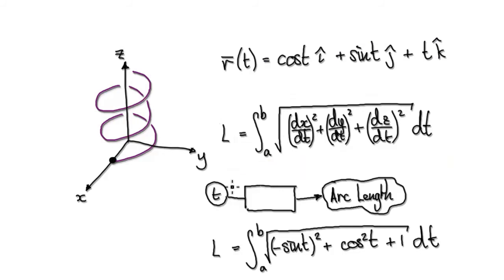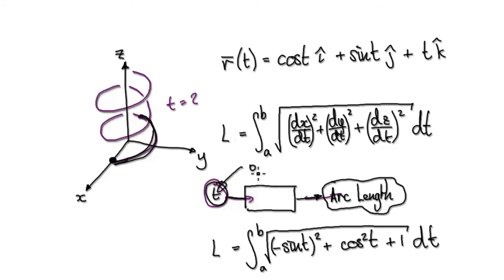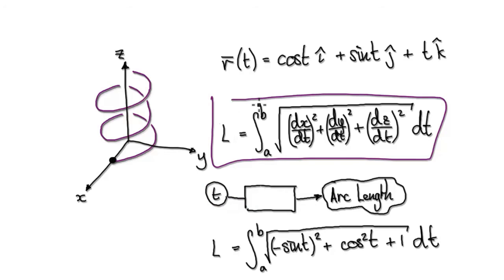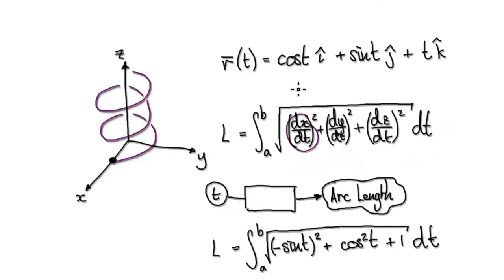We want to somehow create a machine in such a way that when we insert a time, it will give us the arc length. So we insert a time — let's say after two seconds — we want to know the distance travelled in two seconds. We want to create a function where we insert a time and we spit out an arc length. So looking at the formula of the arc length, differentiate the x component.